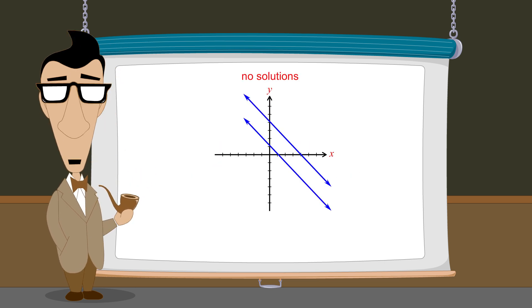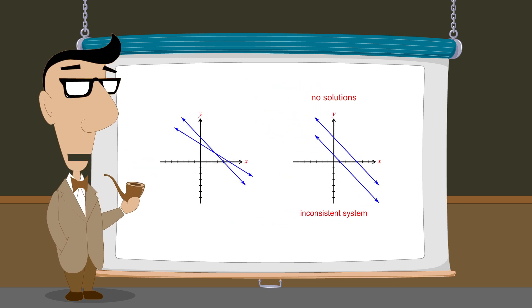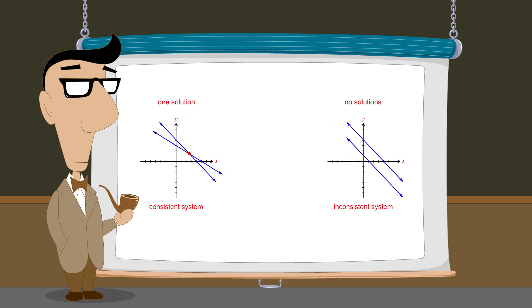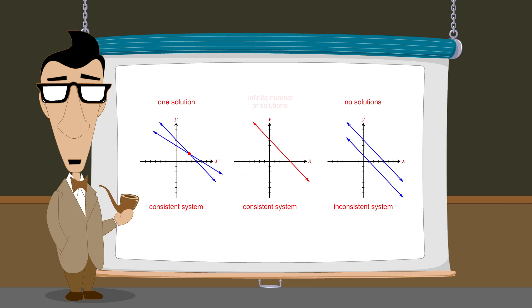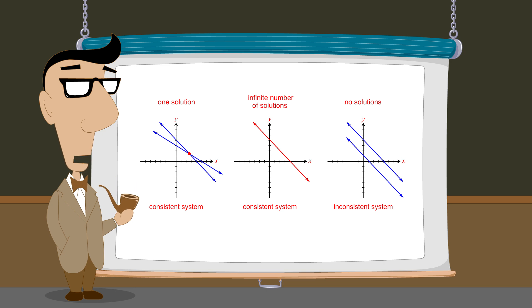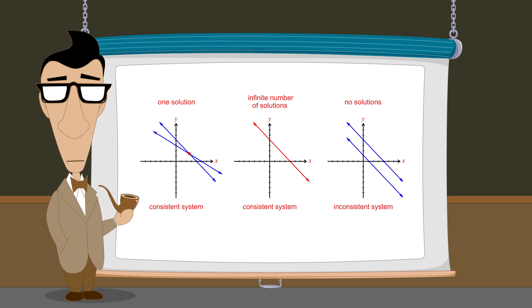Systems which have no solutions are said to be inconsistent, and systems with one or more solutions are called consistent, having either one solution or an infinite number of solutions. We can distinguish between these two types of consistent systems by their equations. If the consistent system is composed of two distinct lines, the equations are independent. And if the consistent system is composed of two identical lines, the equations are dependent.